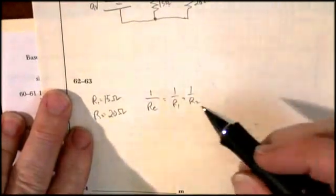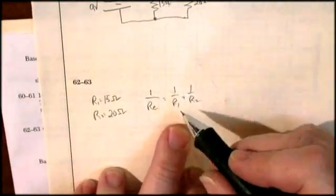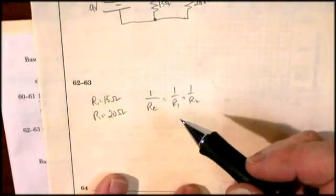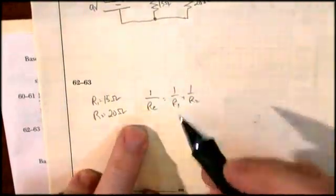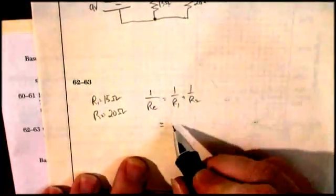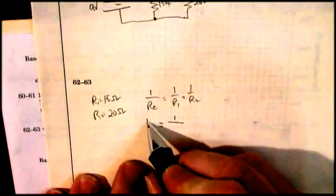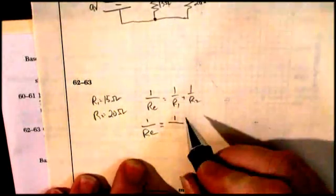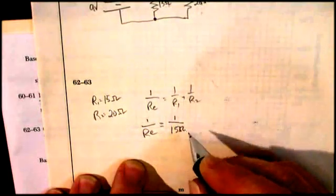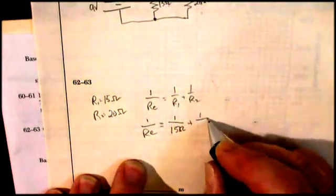1 over R equivalent is equal to 1 over R1 plus 1 over R2. And you know there's some people that will just add 15 and 20 and say it's 35. Now if it was in series, that would be a correct answer. But you've got to do a little common denominator. Adding fractions is a little tricky. However, let's do this. Let's write it up. 1 over equivalent resistance is equal to 1 over 15 ohms plus 1 over 20 ohms.